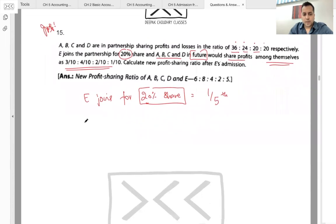So agar one-fifth E le raha hai, to remaining share kya hai? One minus one by five, which is equal to four by five, yes or no? Yes sir.